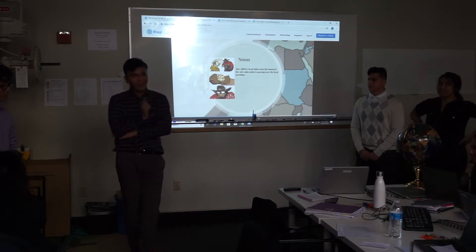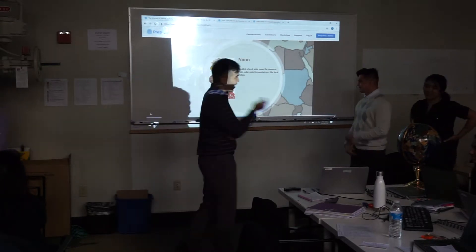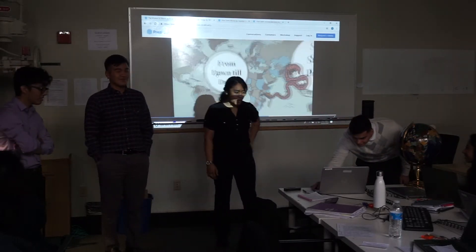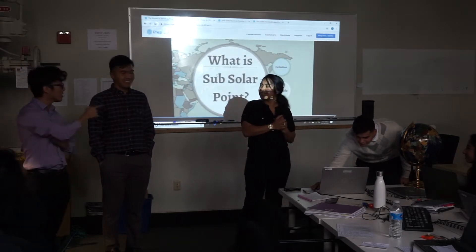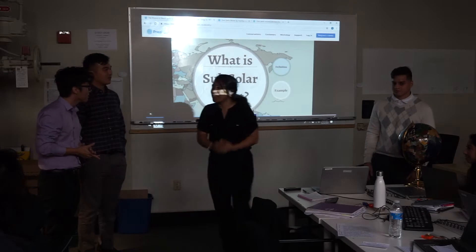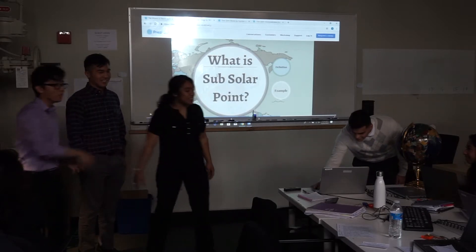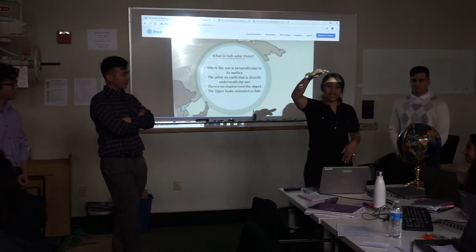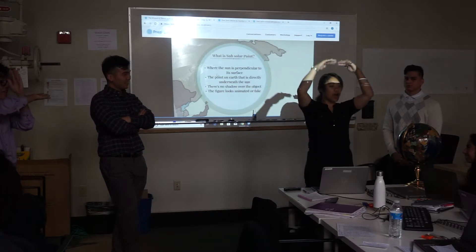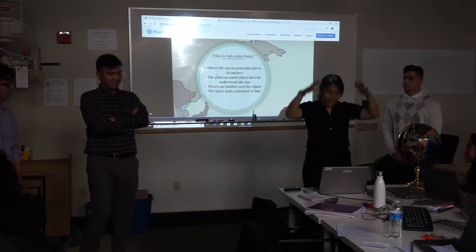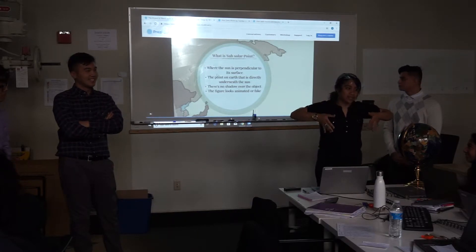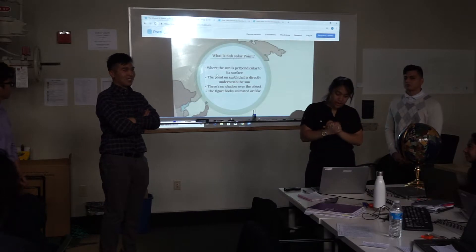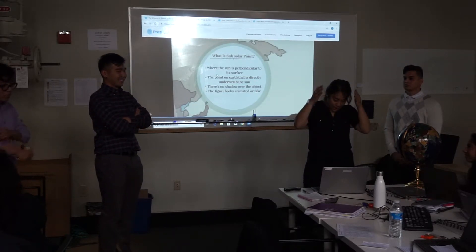A subsolar point — that's a new word. Why don't we pass it over to Anna? She'll tell you more about subsolar points. Why thank you for telling us about the subsolar point. What is a subsolar point? Well, thank you for asking. A subsolar point is basically when the sun is perpendicular to the surface — when the sun is all the way at the top, at the zenith point, it's right above an object. It's where the point on Earth is directly underneath the sun.